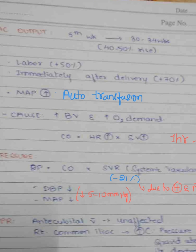Cardiac output starts to increase from the fifth week of pregnancy, coinciding with increased blood volume from the sixth week. It reaches its maximum at 30 to 34 weeks, representing a 40 to 50 percent rise. After that, it becomes almost static. In the supine position, the lowest cardiac output is noted, whereas in the right or left lateral position or knee-chest position, maximum cardiac output is seen.